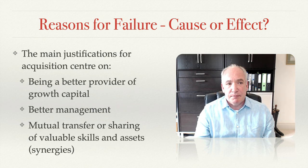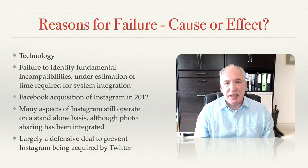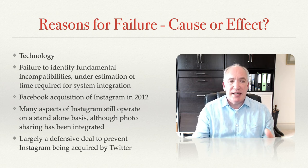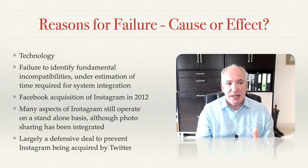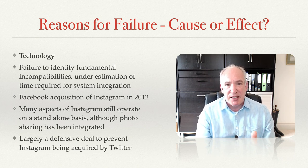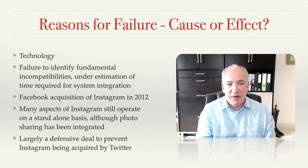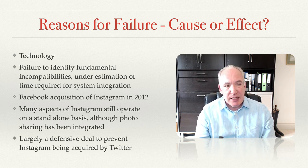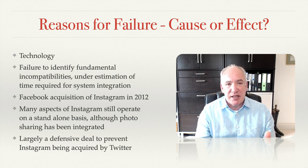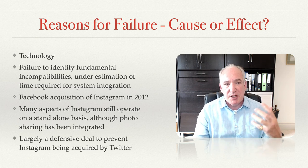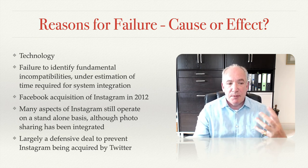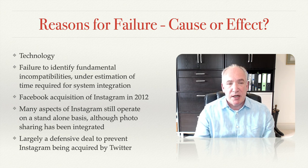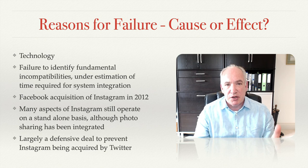Technology can be a significant problem if you don't identify fundamental incompatibilities or underestimate the time required to integrate systems. Facebook's acquisition of Instagram in 2012 is an example — Instagram and Facebook still operate largely separately because they cannot fully integrate their systems, though there has been some photo-sharing integration between the two platforms. Of course, the Instagram acquisition was largely a defensive deal to prevent Twitter from acquiring the company, so technology integration wasn't the primary concern.